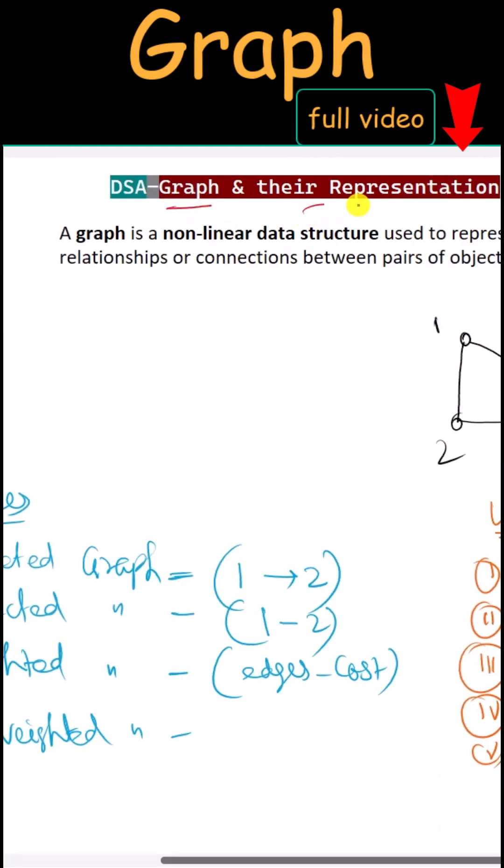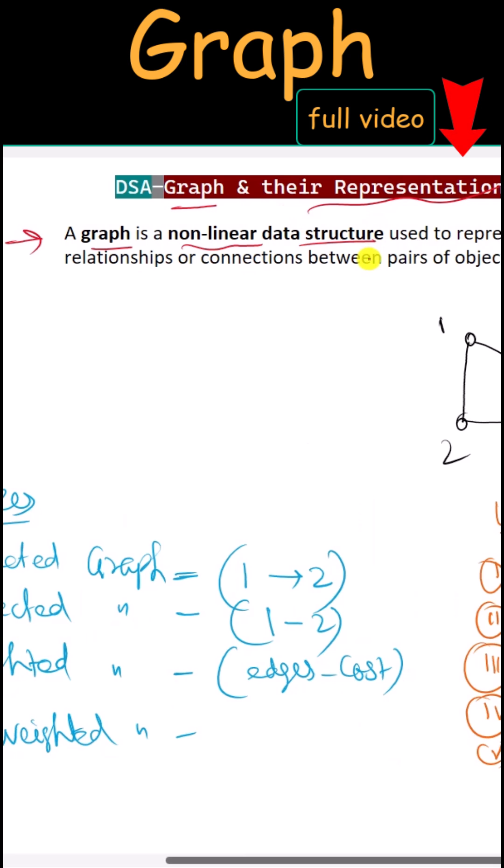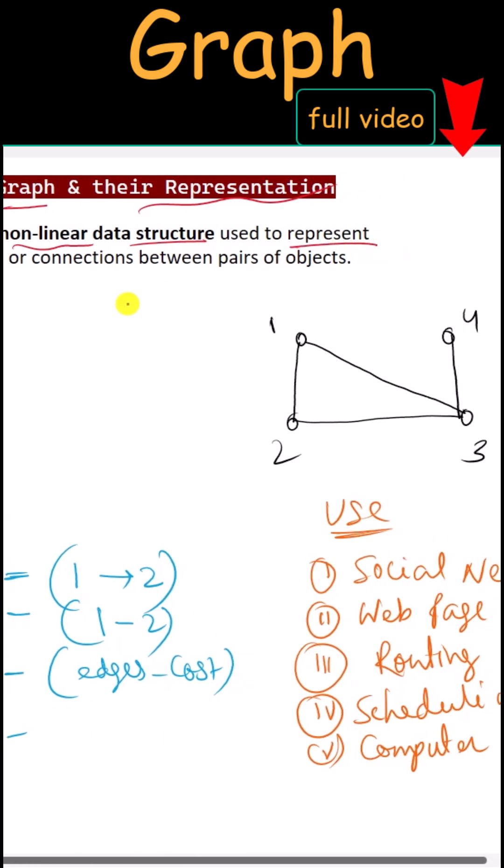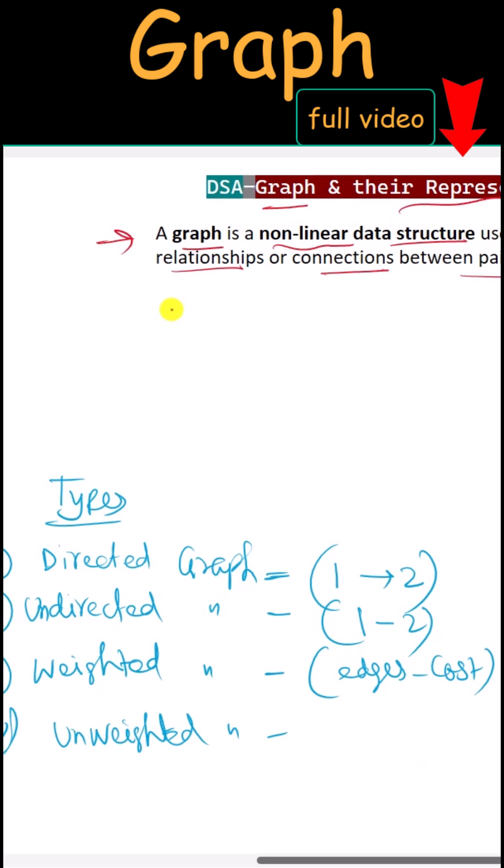Let's talk about graphs and their representation. A graph is a non-linear data structure used to represent relationships or connections between pairs of objects. We can define a graph which consists of vertices and edges.